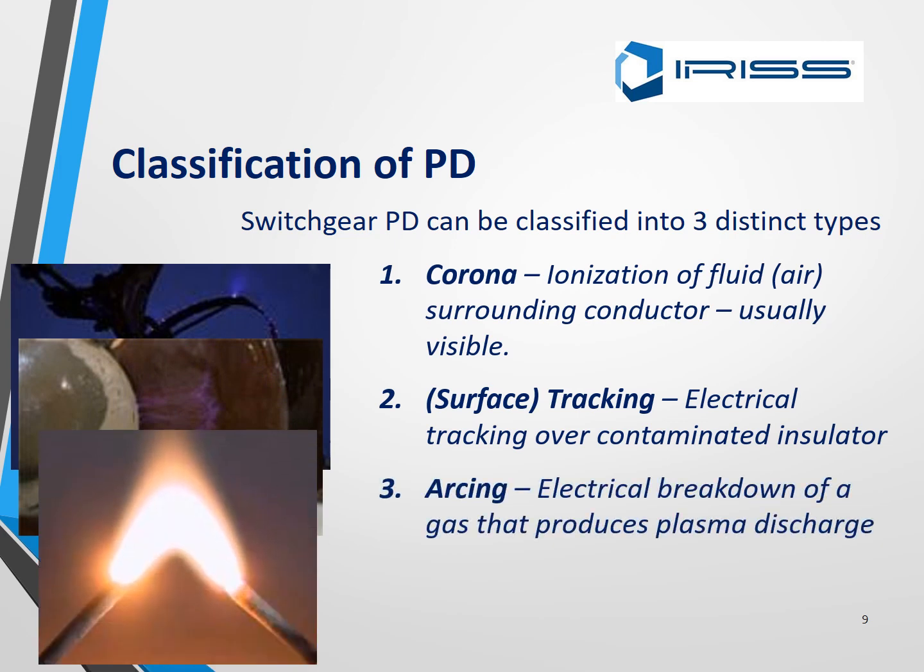PD is classified into three types. Number one is corona, number two is surface tracking, and number three is arcing. Corona is the ionization of fluid air surrounding conductors and is usually visible — normally given off as a white powder. Unfortunately, infrared cannot pick up corona. You can pick it up very faintly with ultrasound, but it is really down on the lower spectrum, so for corona you really do need a partial discharge machine to find it.